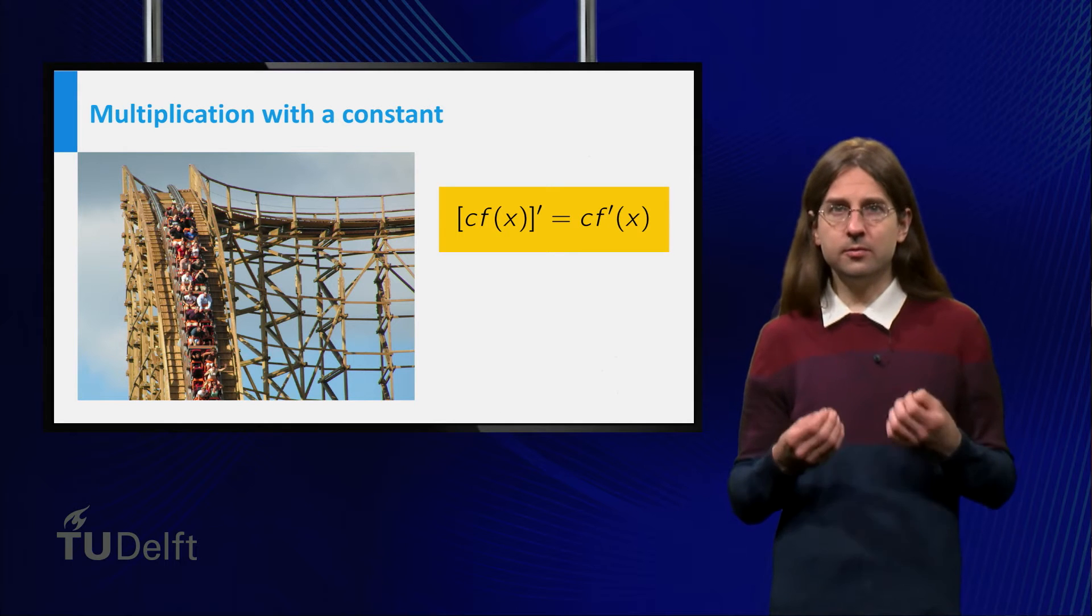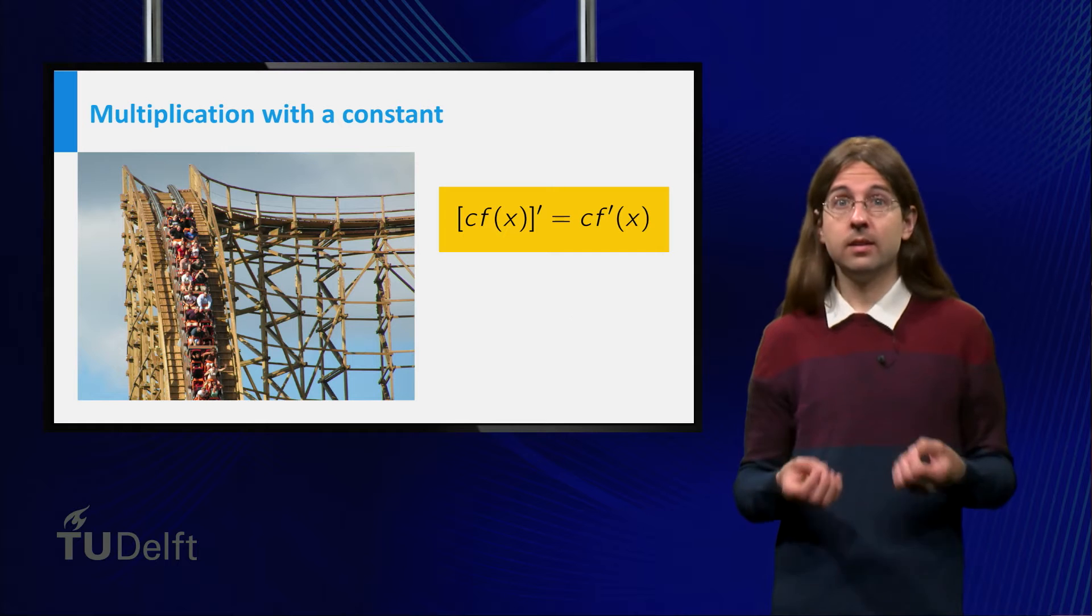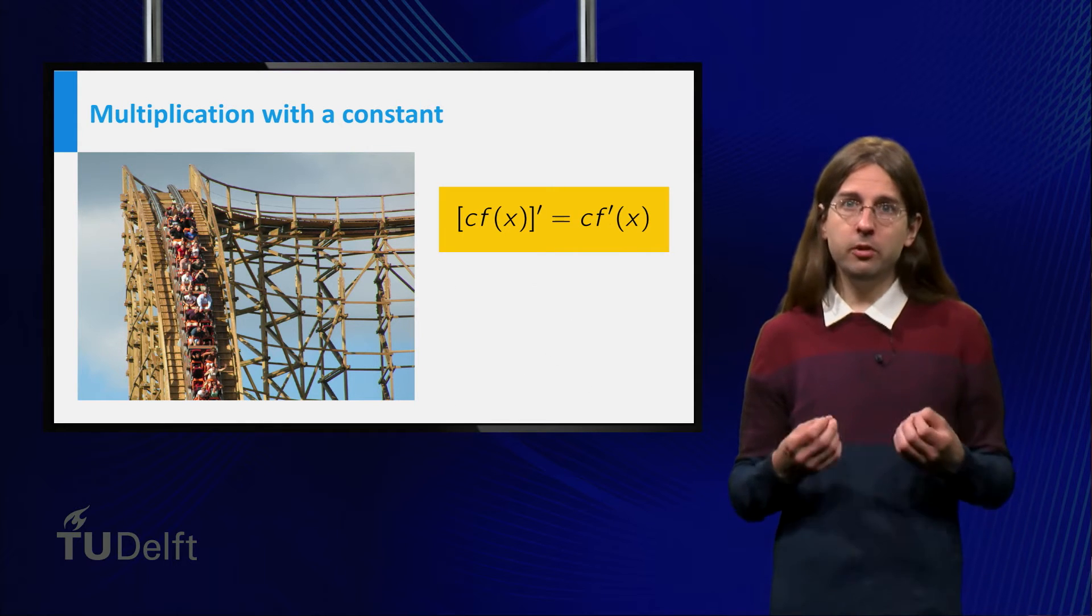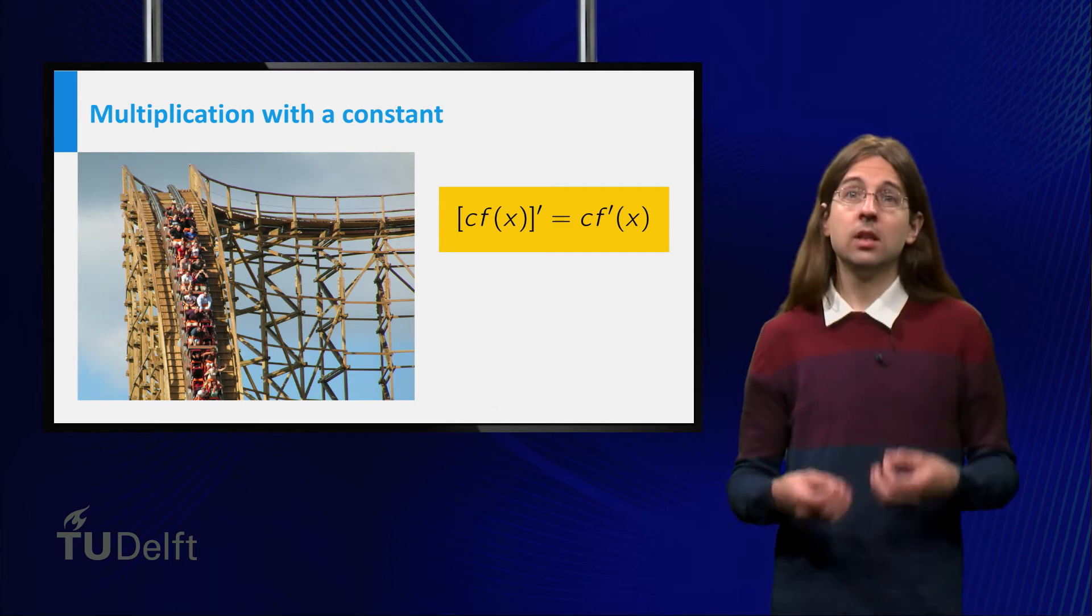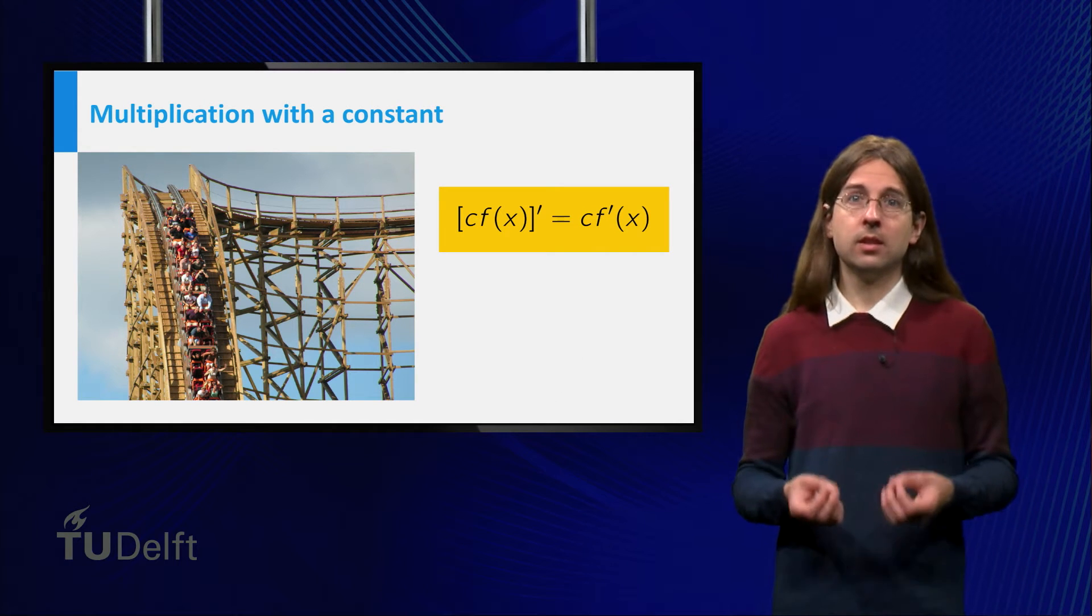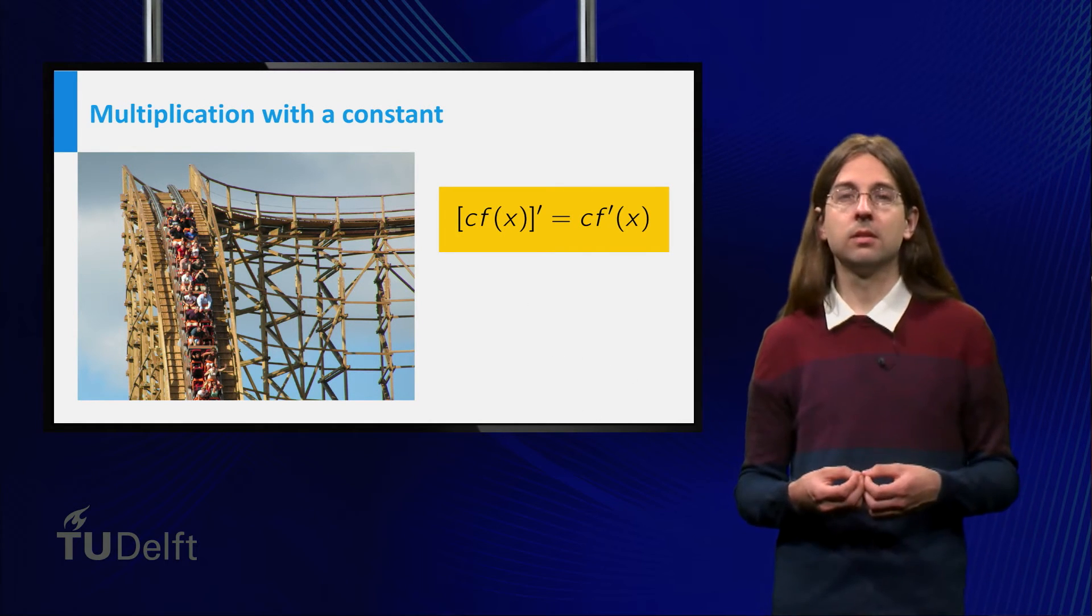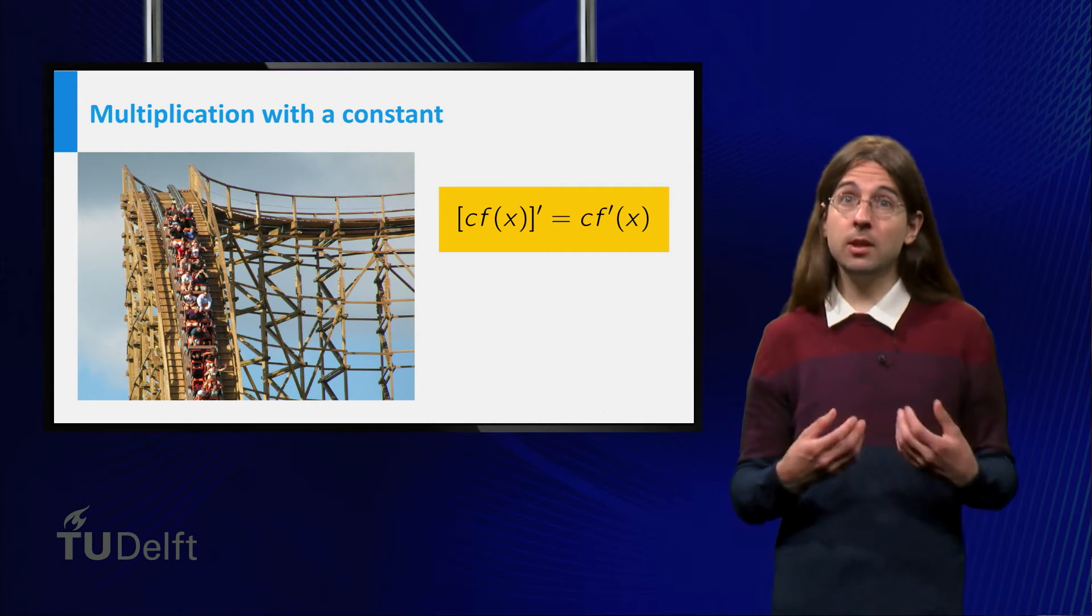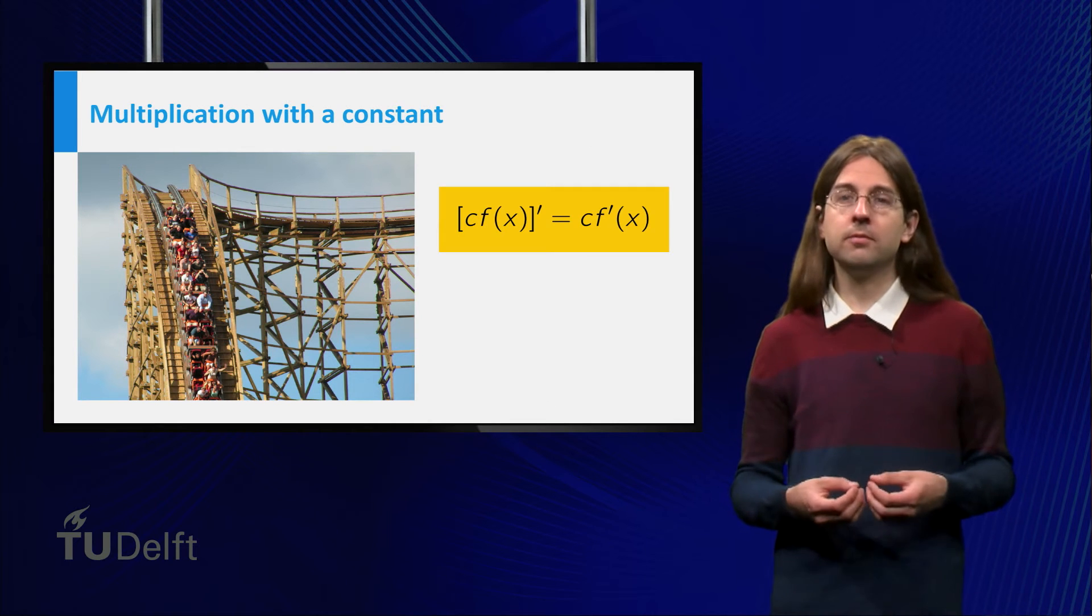If we change the unit of distance to feet, we know that there are 3.3 feet in a meter, so the number of feet travelled is 3.3 times the number of meters travelled. Likewise the number of feet per second is 3.3 times the number of meters per second. This illustrates that the derivative of a constant times a function equals that constant times the derivative of the function.